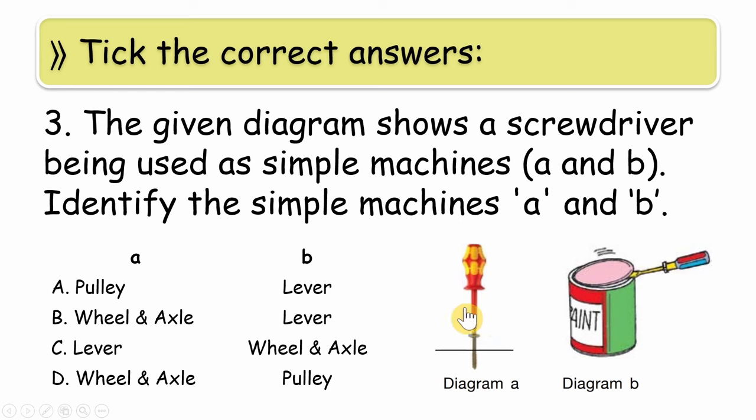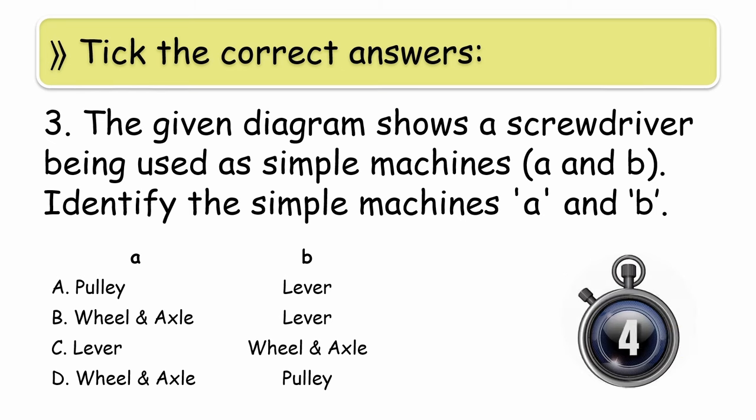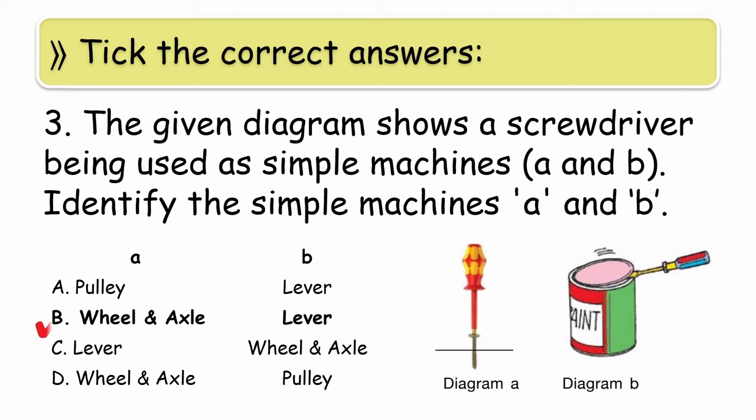So here you need to identify which type of simple machine it is. Your time starts now. Time up, students. The answer is wheel and axle or lever. Meaning A, here the screwdriver is working like a wheel and axle, and in B the screwdriver is working like a lever.